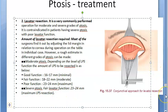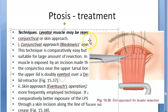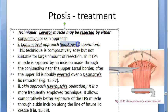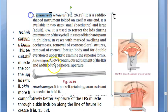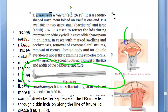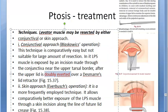If patients have severe ptosis with poor levator function, levator resection is not suitable. The conjunctival approach is also called the Blaskovic's operation — it is comparatively easy but not suitable for large amounts of resection. If a large amount of muscle needs to be removed, the conjunctival approach is not preferred. In the conjunctival approach, a Desmares lid retractor is used to double-evert the upper lid.